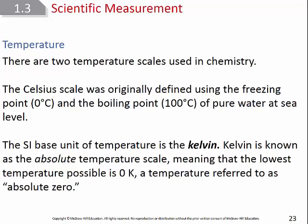So we have a different temperature scale called the Kelvin scale. This is the absolute temperature scale because it cannot be negative. The lowest possible temperature is zero Kelvin, referred to as absolute zero.